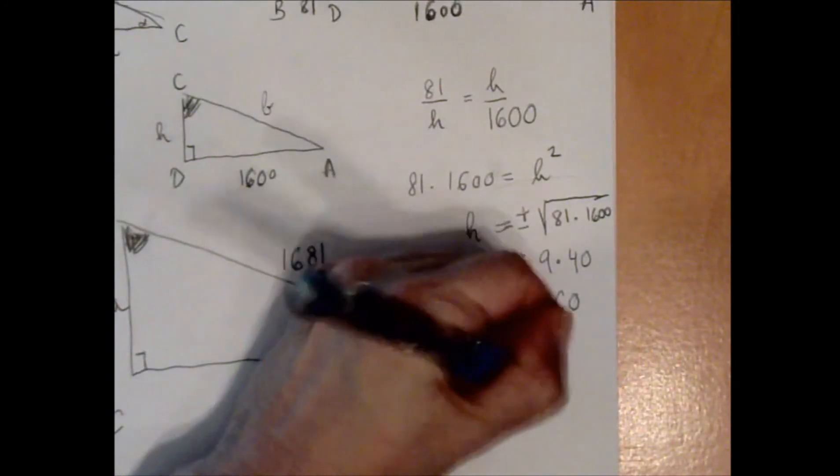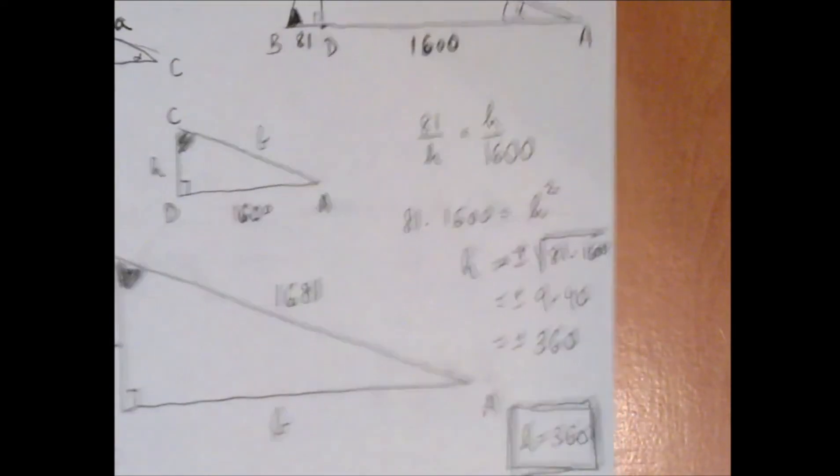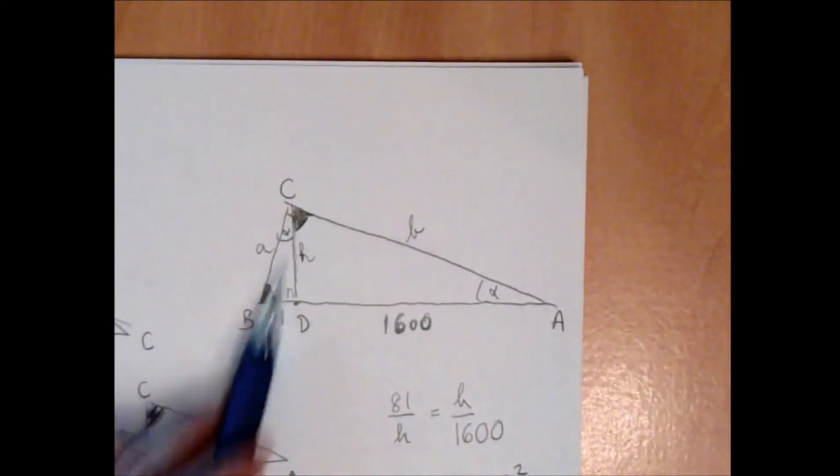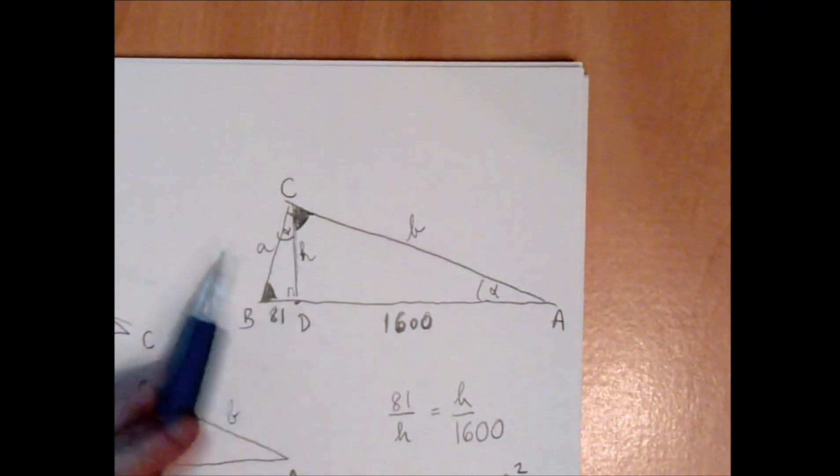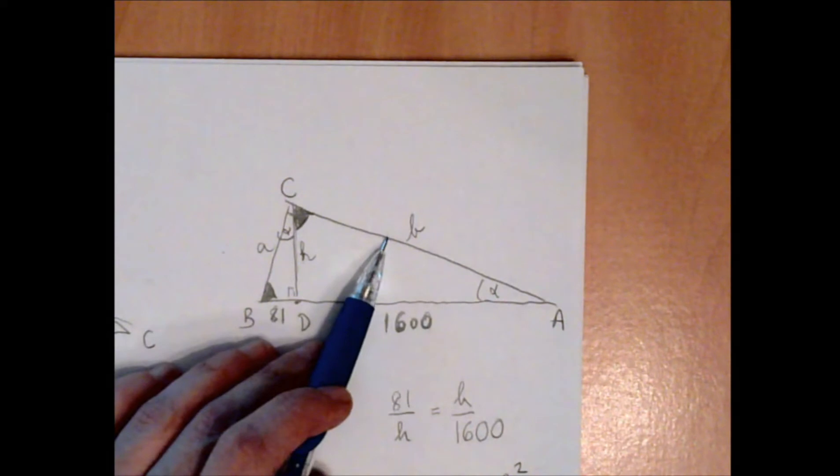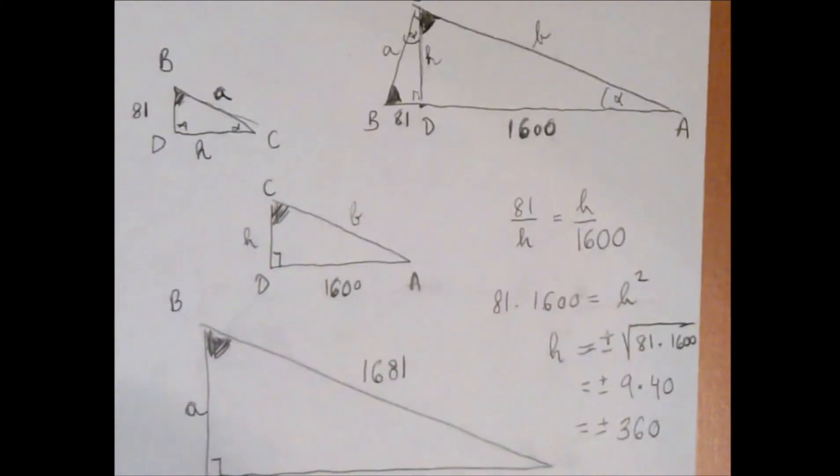After this step we have all kinds of options. We can go back to the original picture and apply the Pythagorean theorem between h and 81 to find a, and between h and 1600 to find b. So basically the problem is over, but just for practice let's look for more ratios.